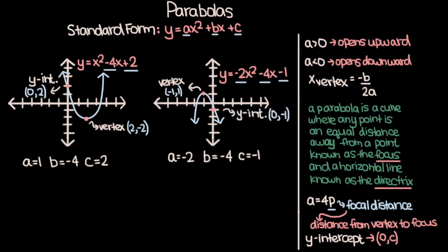The axis of symmetry is the vertical line that passes through the vertex of the parabola and splits it into two equal halves. For the parabola on the left, the axis of symmetry is x equals 2. For the parabola on the right, it is x equals negative 1. As you can see, the axis of symmetry always has the same x-value as the vertex.